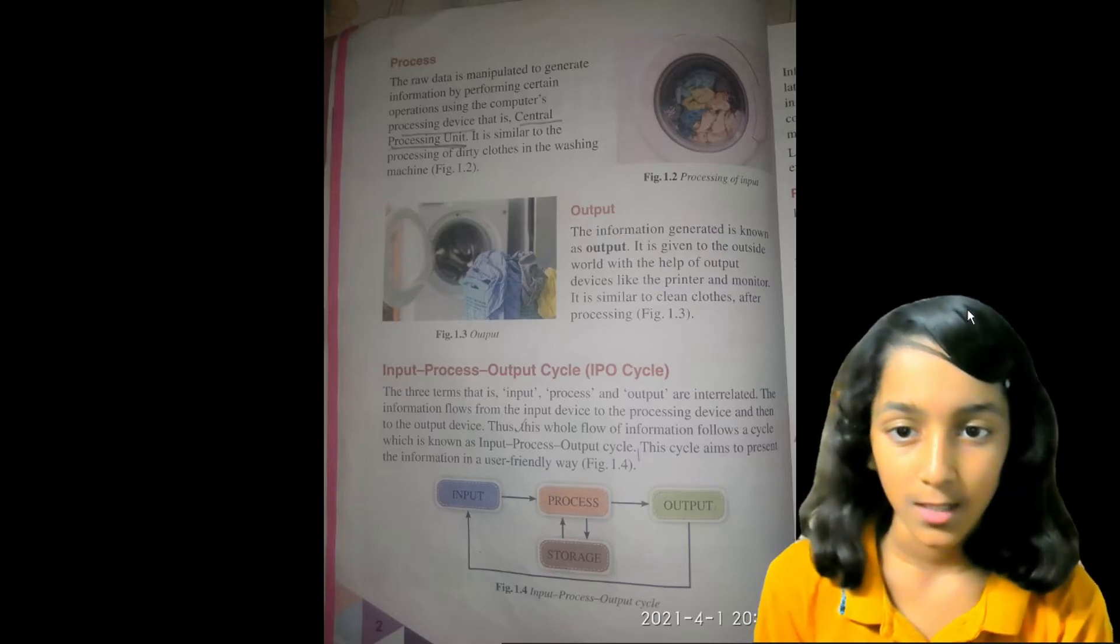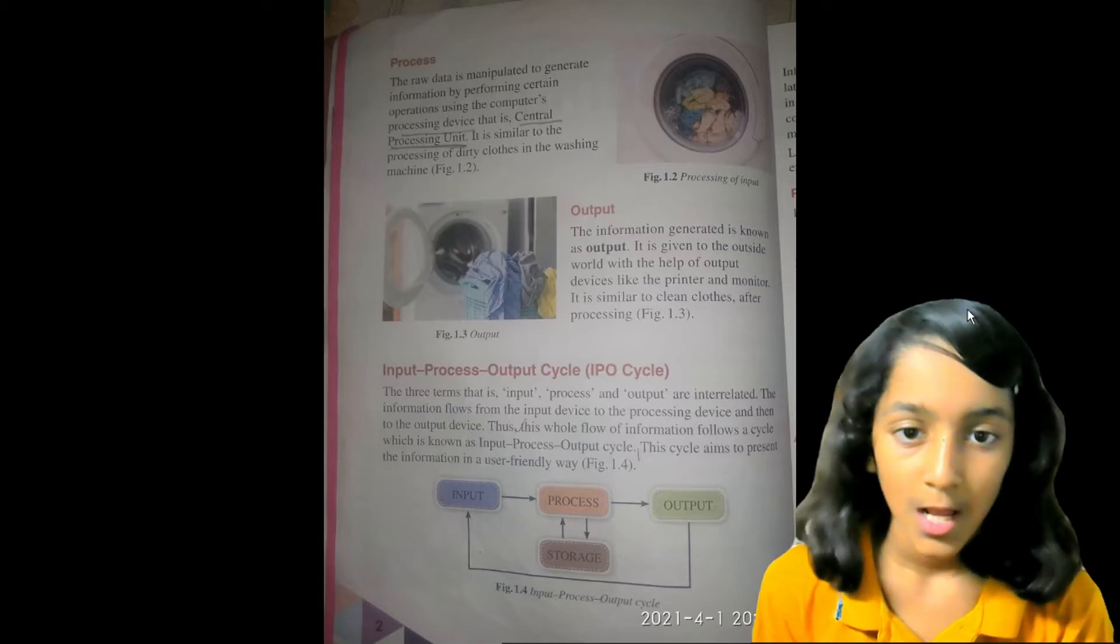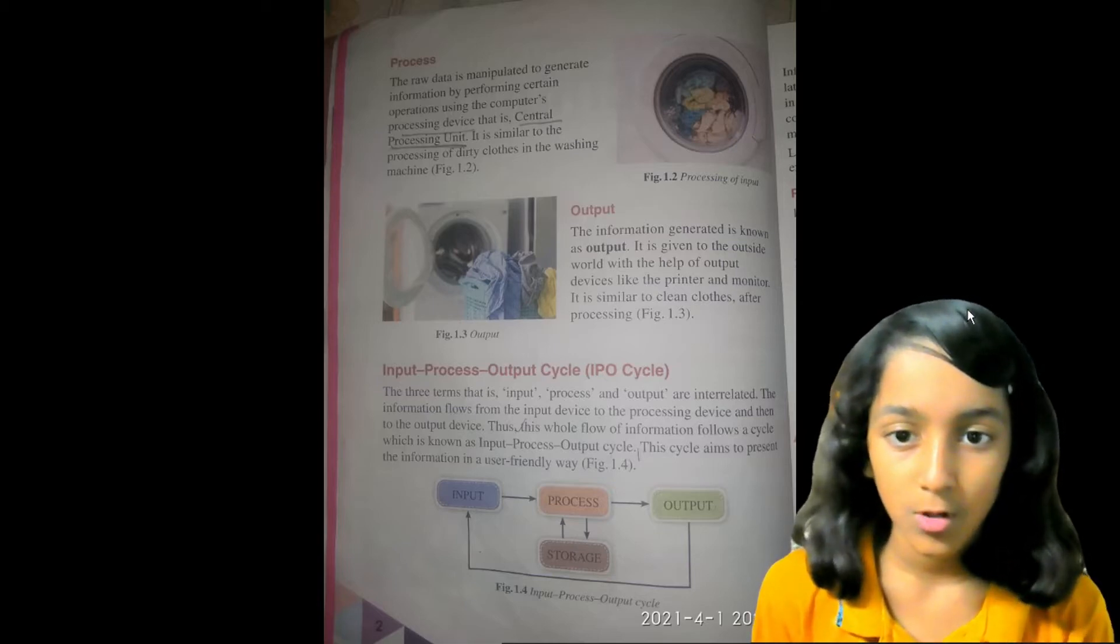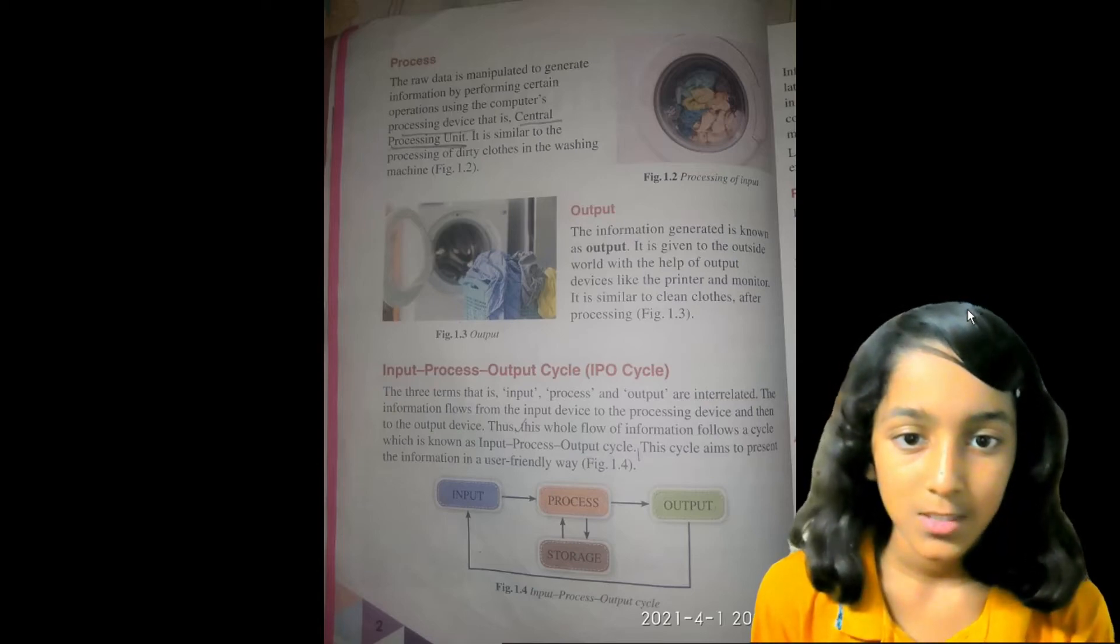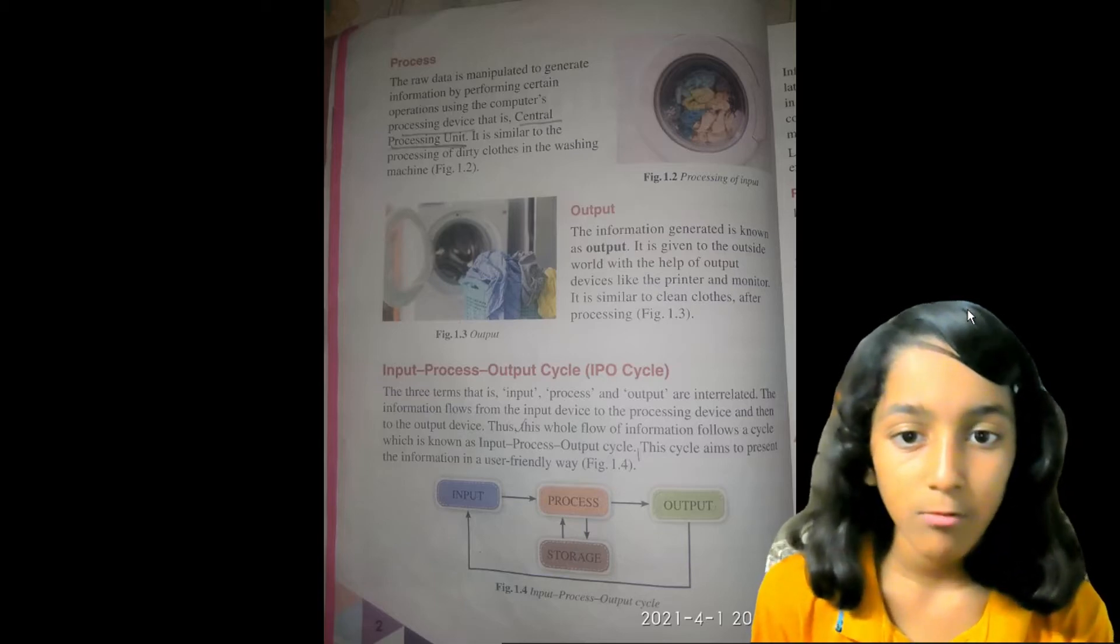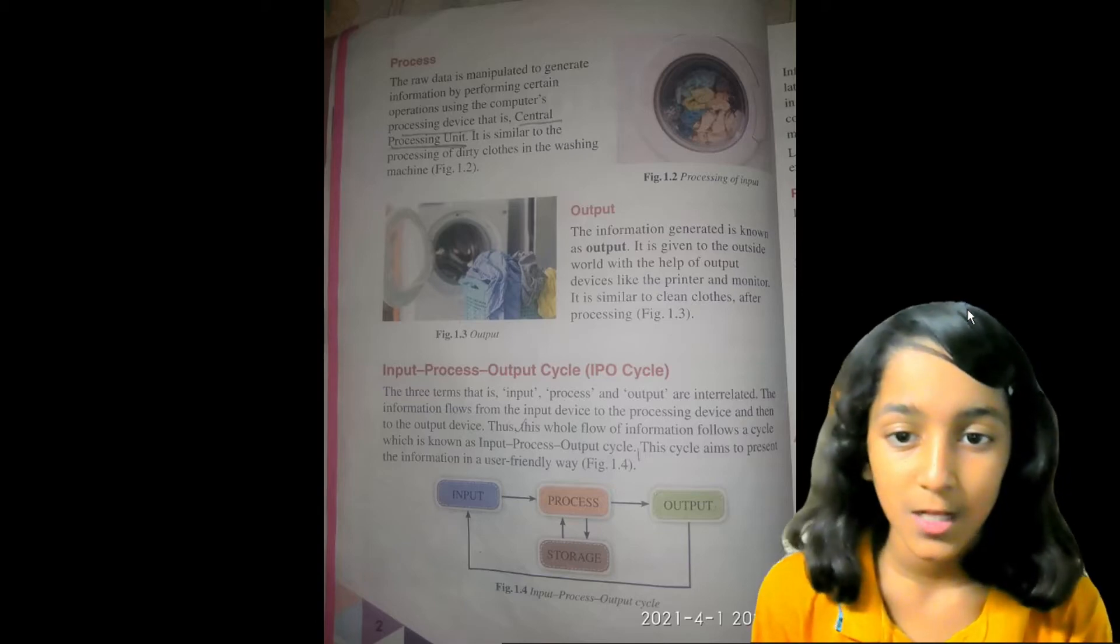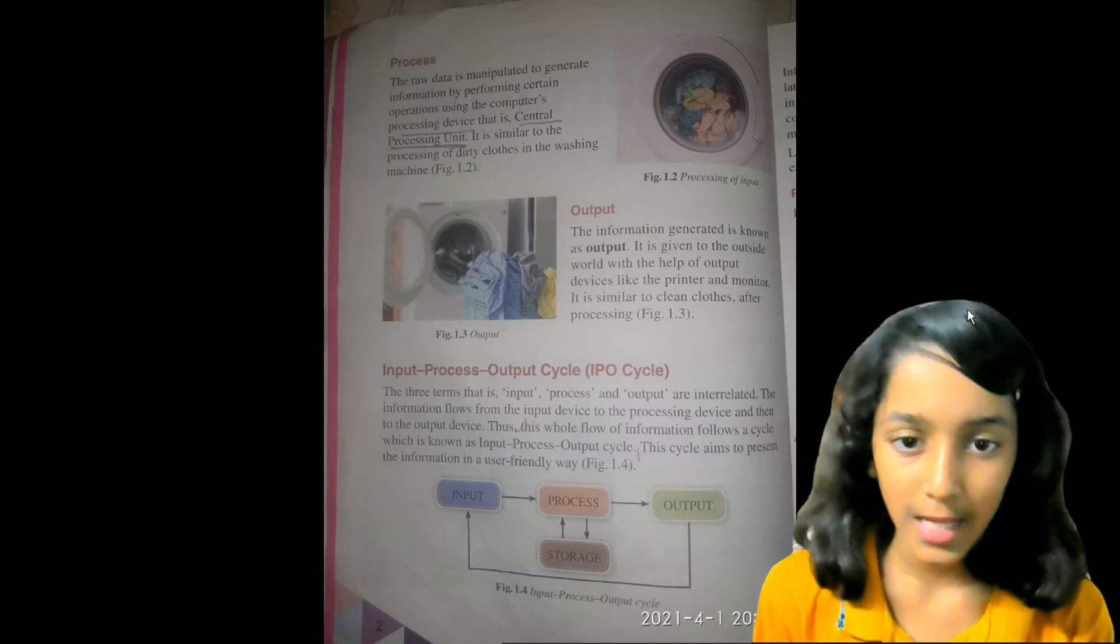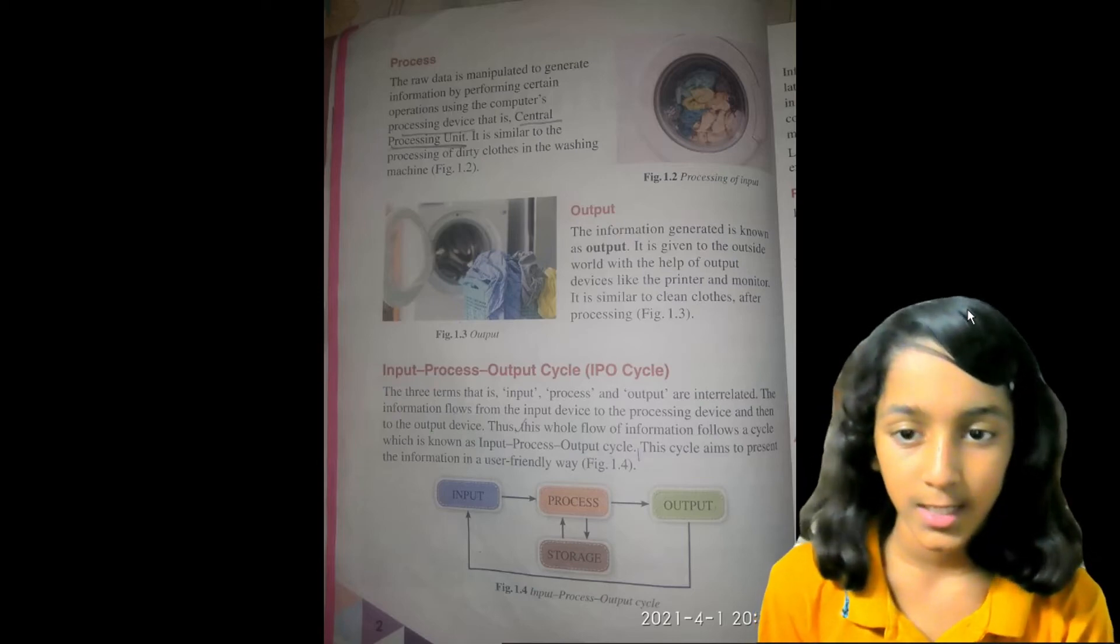Input Process Output Cycle. The three terms, i.e., input, process and output are interrelated. The information flows from the input device to the processing device and then to the output device. Thus, this whole flow of information forms a cycle which is known as input-process-output cycle. This cycle aims to present the information in a user-friendly way.